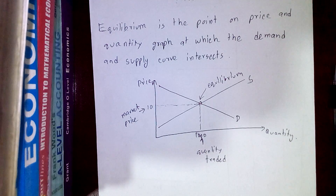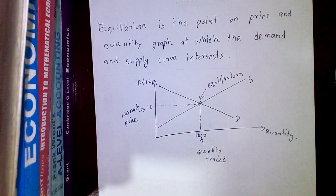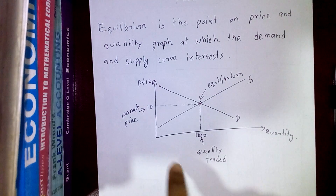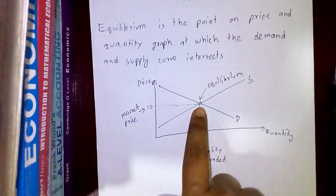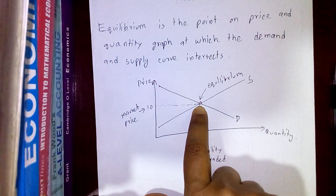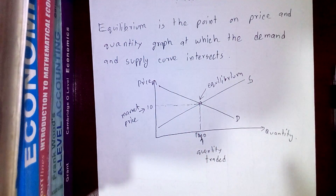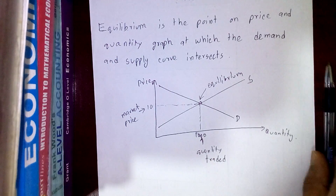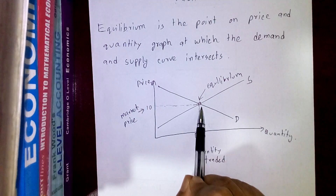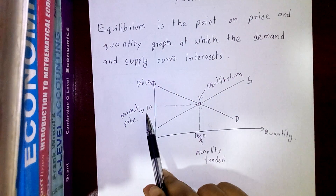For example, the price set for rice is 10, and that price is set by the interaction of the demand curve and the supply curve. The quantity traded at this price is 1000 units. So this particular price, 10, is the market price, and 1000 is the quantity traded.